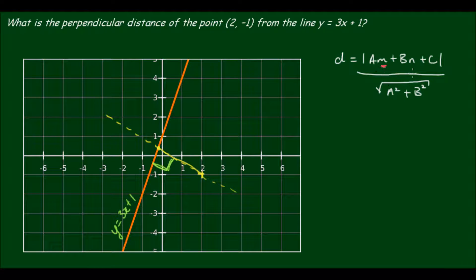Now m and n are simply the coordinates of the point of interest. So m is the x coordinate and n is the y coordinate. So in our case (m, n) = (2, -1).